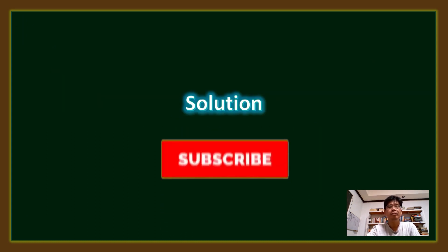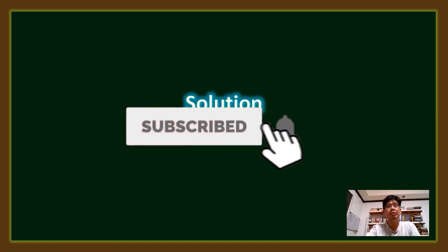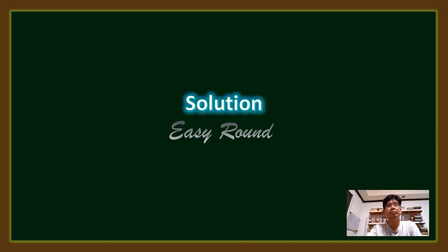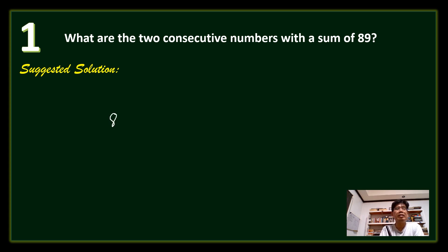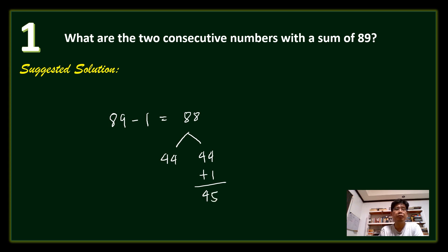Did you get all 10? Let us now show the solution to the 15-second questions. Question number 1: What are the two consecutive numbers with the sum of 89? Since we have 89, subtract 1 to get 88, then divide by 2 to get 44 and 44. Add the 1 back to one of the numbers: the answer is 44 and 45.